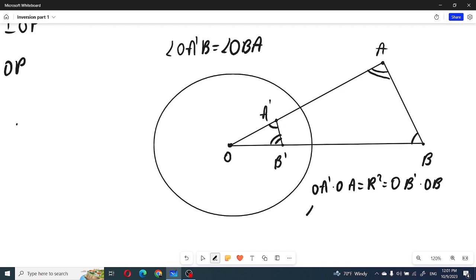So in triangle O A prime B prime must be similar to triangle OBA. In this case we will see that angle O A prime B prime must be equal to OBA, and OB prime A prime must be OAB.